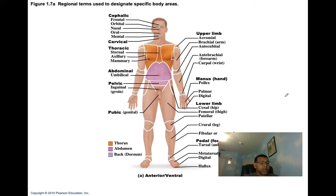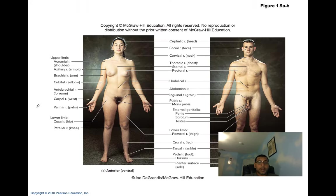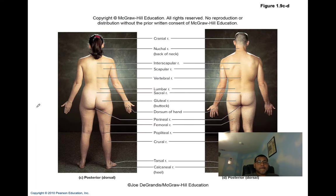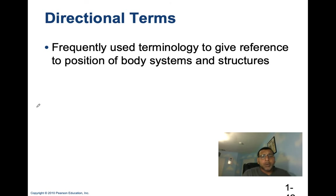There are regional terms I want you to go through and understand. They allow you to identify different regions of the body. Here we have both anterior and posterior views, so go through and understand each of these regional terms. Directional terms are frequently used to give reference to the position of the body's systems and structures.